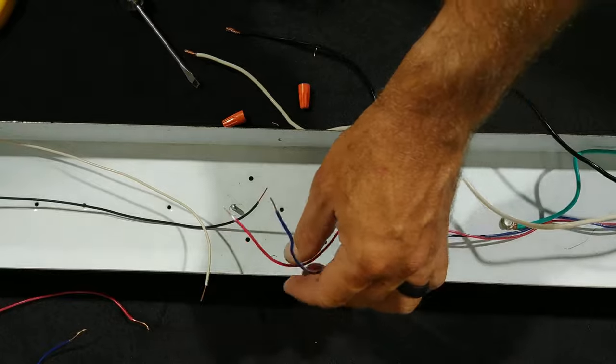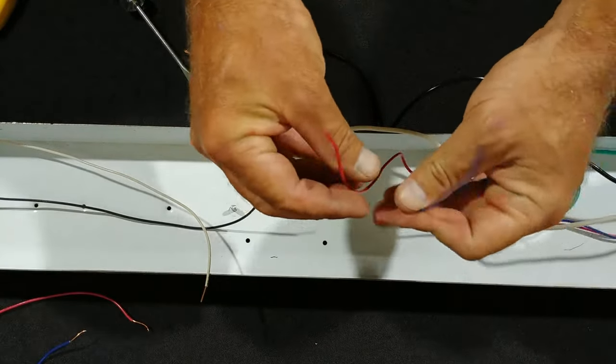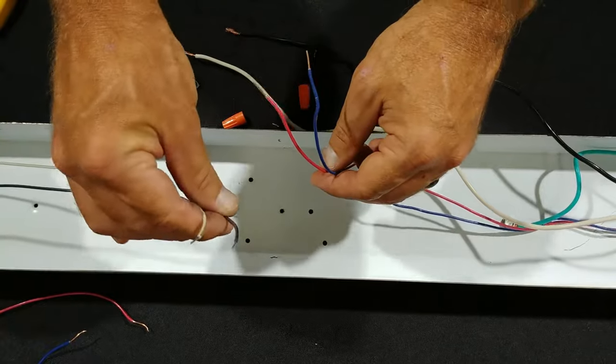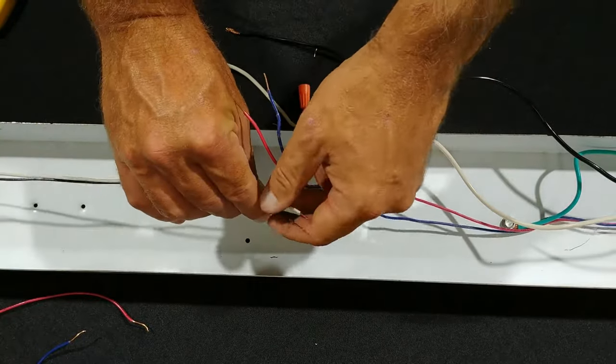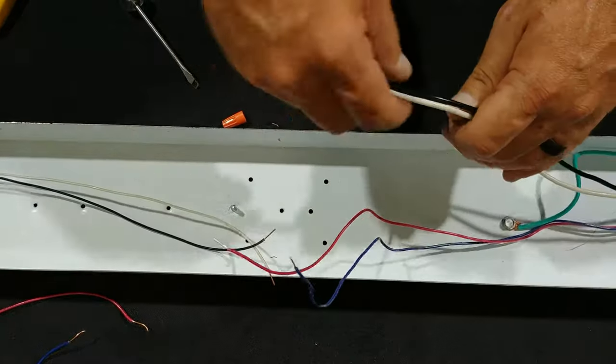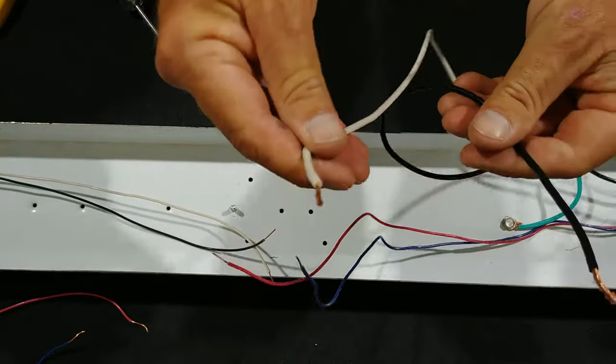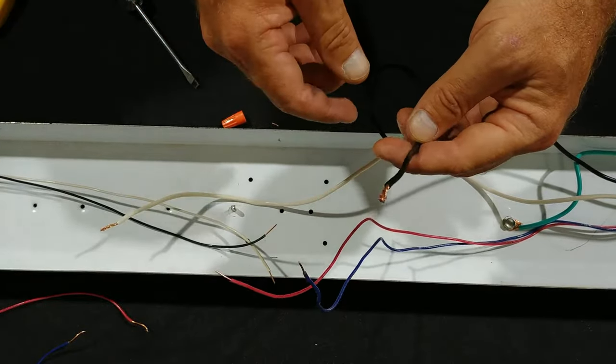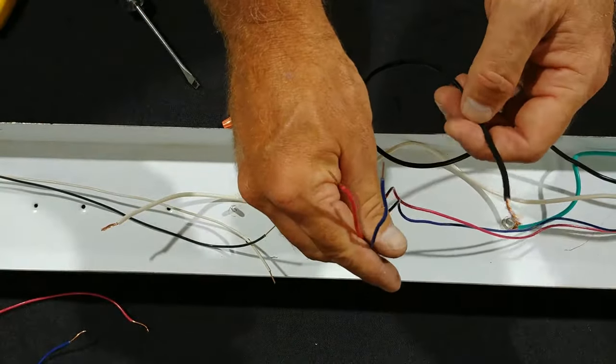As you remember, we have our blue and red wire coming in from this end of the fixture, and then we have the black and white wire coming in from the other end of the fixture. Our power line coming in white and black. It does not matter which color you use here to hook up one end of the fixture.